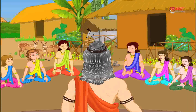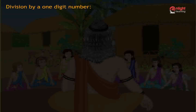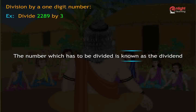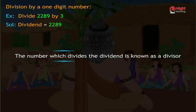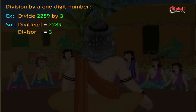Children, today we will learn how to divide a number by a one digit number. For example, divide 2289 by 3. Let me show you the procedure step by step. The number which has to be divided is known as the dividend. Here the dividend is 2289. The number which divides the dividend is known as a divisor. In the given problem, 3 is the divisor.